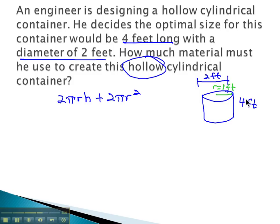So we just plug everything in to this formula. 2 times pi, which is 3.14, times the radius, which is 1 foot, times the height, it's 4 feet high, plus 2 pi, 3.14, times the radius, which is 1 foot squared.